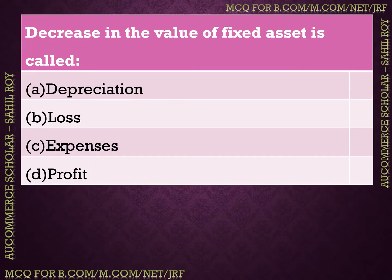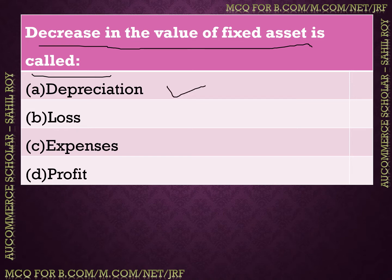The next question: Decrease in the value of fixed assets is called what? We have four options: depreciation, loss, expenses, or profit. The correct answer is option A: depreciation. When a fixed asset decreases in value, we call it depreciation.